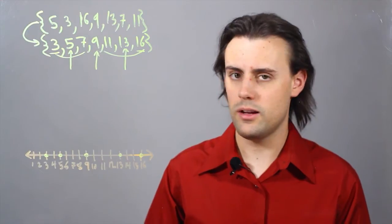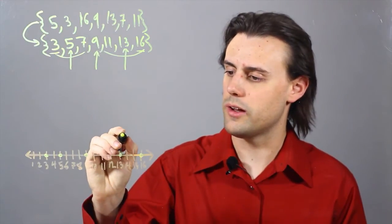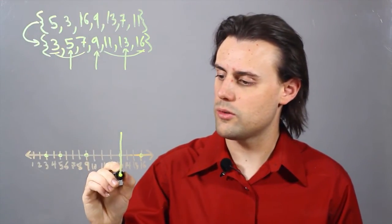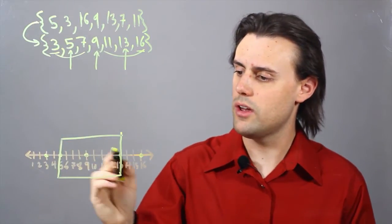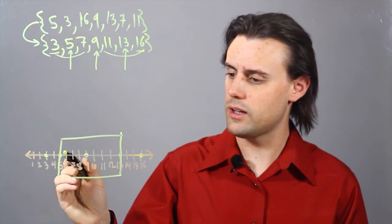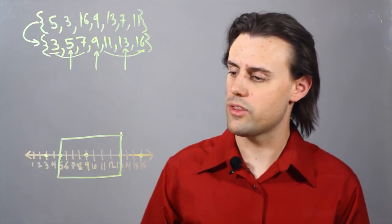And now I can construct my box and whiskers plot. So, it's going to be a box that encompasses all numbers, including the quartiles, 5 and 13.